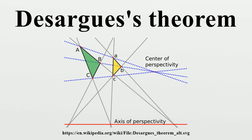This proves Desargues's theorem if the two triangles are not contained in the same plane. If they are in the same plane, Desargues's theorem can be proved by choosing a point not in the plane, using this to lift the triangles out of the plane so that the argument above works, and then projecting back into the plane. The last step of the proof fails if the projective space has dimension less than three, as it may not be possible to find a point outside the plane. Monge's theorem also asserts that three points lie on a line and has a proof using the same idea of considering it in three rather than two dimensions and writing the line as an intersection of two planes.